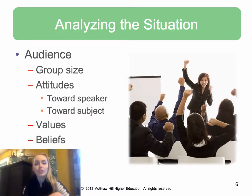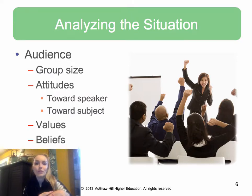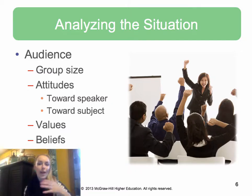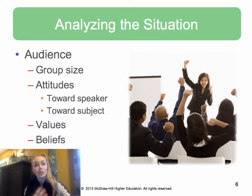Other audience considerations include group size — if you're speaking to a huge lecture hall, maybe you need a microphone and much larger inclusive examples. Maybe you really know the people you're talking to, so you can tailor your examples to them. Also think about attitudes toward the speaker. How does the audience feel about you and the topic you are going to address? Are they more hostile toward you and the topic at hand, or are they familiar and curious? Do they know you well? How much detail do you need to go into?